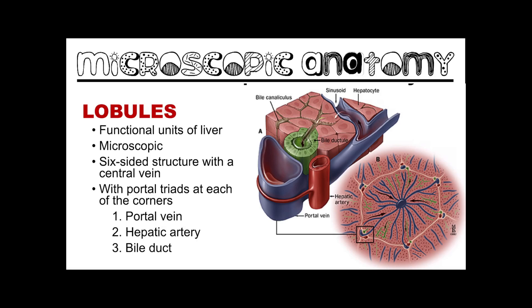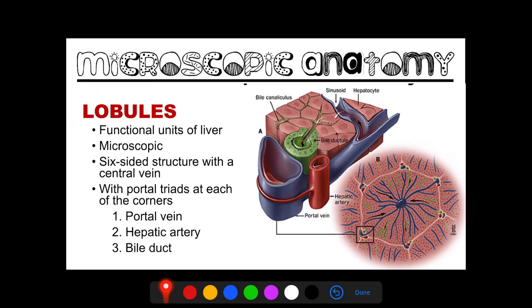Now let us have the microscopic anatomy of the liver. The liver is divided into microscopic units called lobules, which are the functional units of the liver. It is a six-sided structure with a central vein at the center. Each corner contains the portal triad, which includes the portal vein, the hepatic artery, and the bile duct.